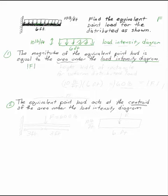So, the area is going to be my height times my width of the rectangle. For my uniform distributed load, the area of the rectangle will be 10 times 6, which equals 60 pounds. This is the magnitude of my equivalent point load.